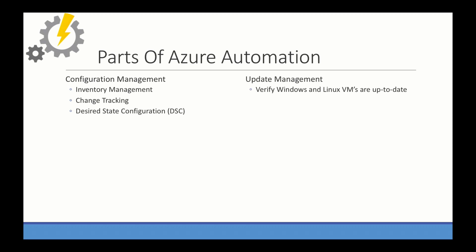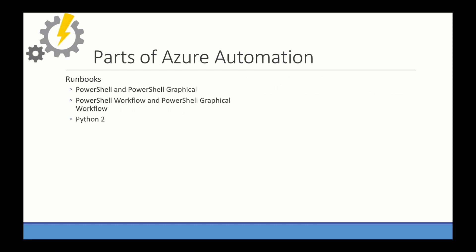With Update Manager, you can verify Windows and Linux VMs are up to date, or schedule updates to be applied to those virtual machines. Runbooks are another part of Azure Automation. Runbooks are scripts hosted in Azure Automation. They can be PowerShell or PowerShell Graphic, PowerShell Workflow or Workflow Graphic, and Python 2. Think of this as a task scheduler in Azure, except with a lot of additional features and flexibility.